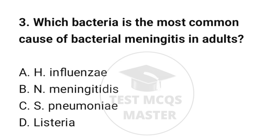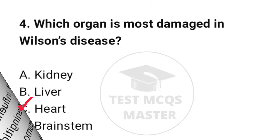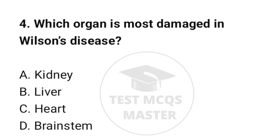Question number 3: Which bacteria is the most common cause of bacterial meningitis in adults? The correct option is C: S. pneumoniae. Question number 4: Which organ is most damaged in Wilson's disease? The correct option is B: Liver.